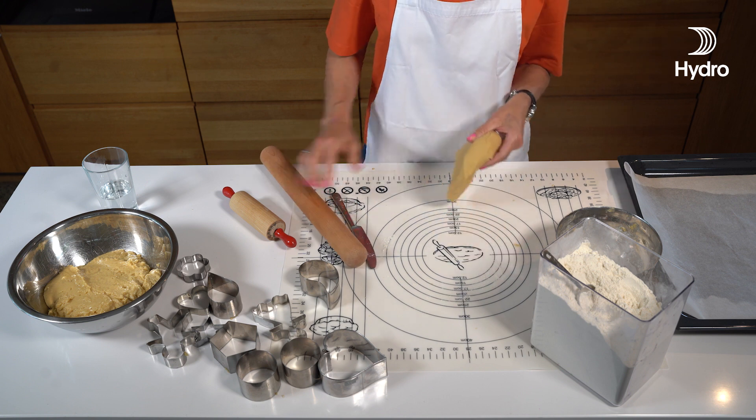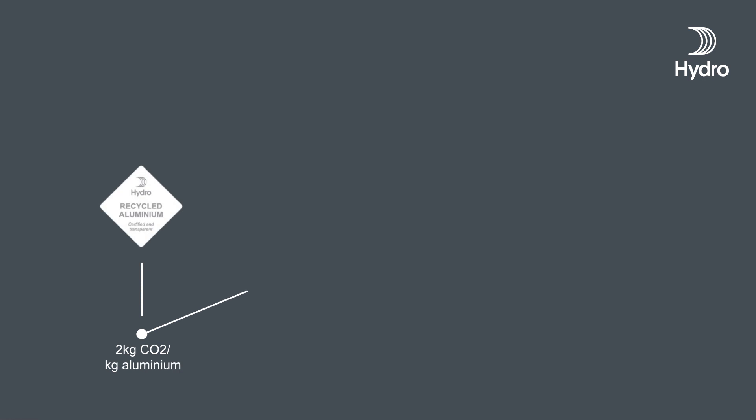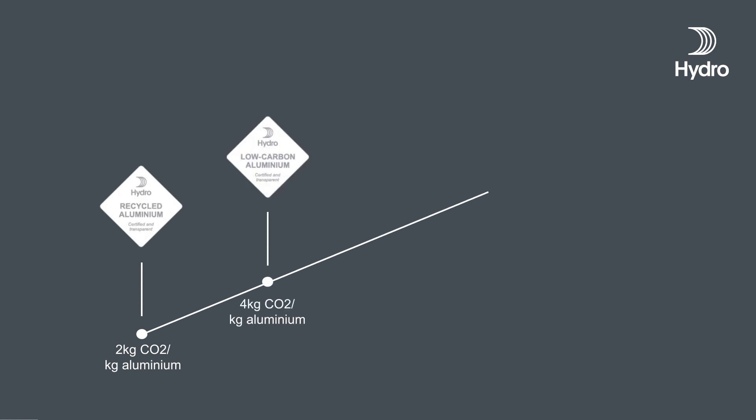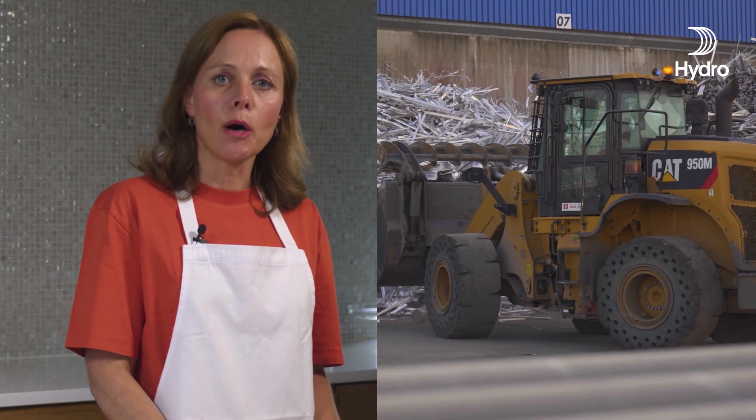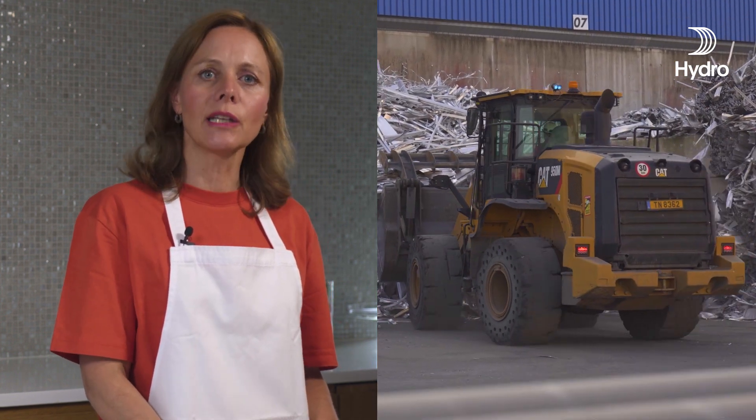The tricky thing with aluminium is that its carbon count isn't fixed. It can range from as low as 2 kilos of CO2 to a massive 20 kilos of CO2 per kilo of aluminium produced. This means the where and the how of aluminium production significantly impacts its carbon footprint, just like how the recipe affects the calorie count in my cookies.